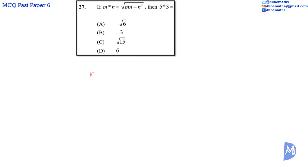Question 27: M asterisk N is equal to the square root of M multiplied by N minus N squared. Therefore, 5 asterisk 3 is equal to the square root of 5 multiplied by 3 minus 3 squared.